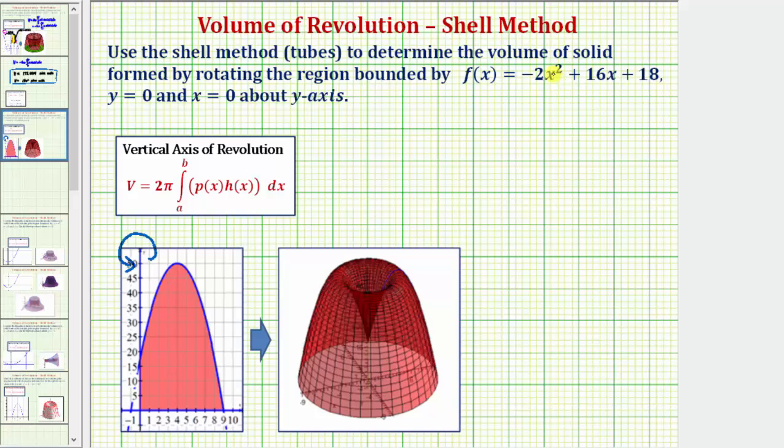So let's review how we find the vertical intercepts of f of x. We set f of x equal to 0 and solve for x, which will give us the equation 0 equals negative 2x squared plus 16x plus 18.